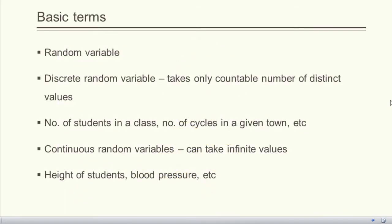To define the normal distribution more statistically, let's go back to basics. A random variable is a variable whose possible value is the outcome of a random phenomenon. There are two types of random variables: discrete and continuous. A discrete random variable takes only a countable number of distinct values. Number of students in a class and number of bicycles in a town are two examples.